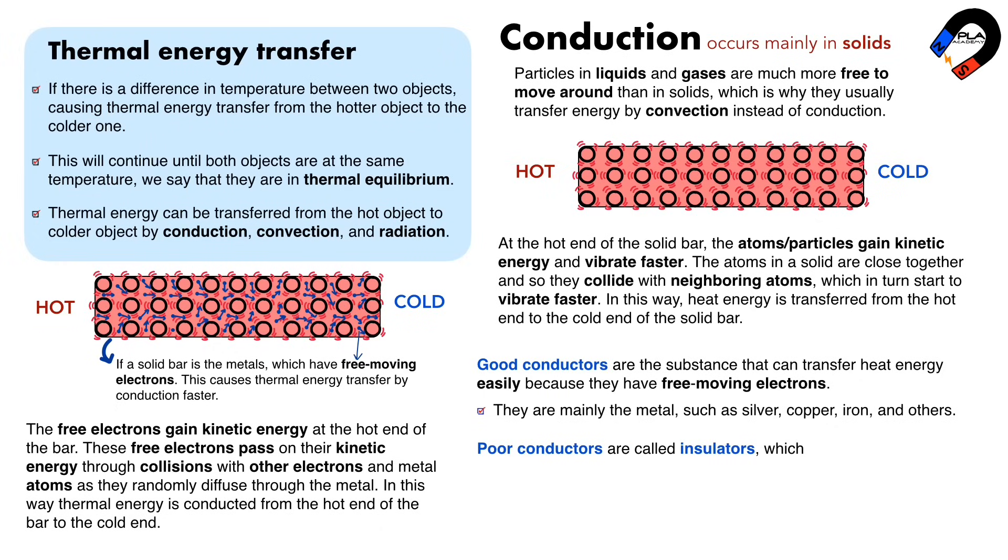Poor conductors are called insulators, which are the substances that transfer heat energy difficultly because they have no free-moving electrons. Insulators are mainly non-metals, except for graphite, which is a conductor.